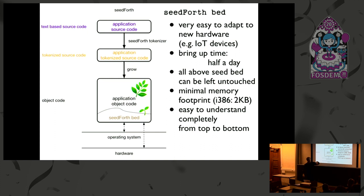There are three levels: text-based source code at the top, tokenized source code in the middle, and then the SeedForce bed, the growing SeedForce system, below. We also have operating system and hardware support necessary to do I/O or access hardware for IoT devices. If you have source code of your application, it first will be tokenized. Then this token stream will be fed into the SeedForce bed and it will be extended. But still it can do ICE — it can interpret things, compile things, and execute things on the fly during compilation.